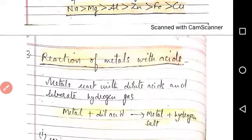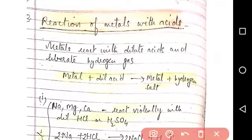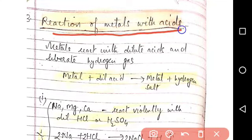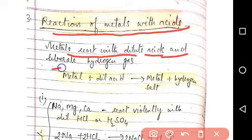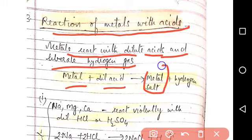Now next reaction is the reaction of metals with acids. Metals react with dilute acids and liberate hydrogen gas. As we have seen in case of water, hydroxide is formed and hydrogen is formed. In the same way, when metals react with dilute acid, corresponding salts are formed and hydrogen gas is liberated.